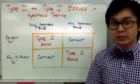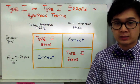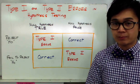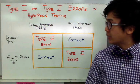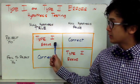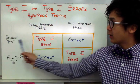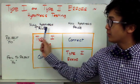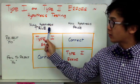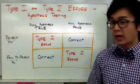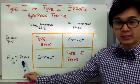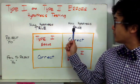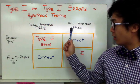In significance testing, we know that we have two competing hypotheses: the null hypothesis and the alternative hypothesis. Committing a type 1 error is rejecting the null hypothesis even if the null hypothesis is true. And committing a type 2 error is not rejecting the null hypothesis even if the null hypothesis is false.